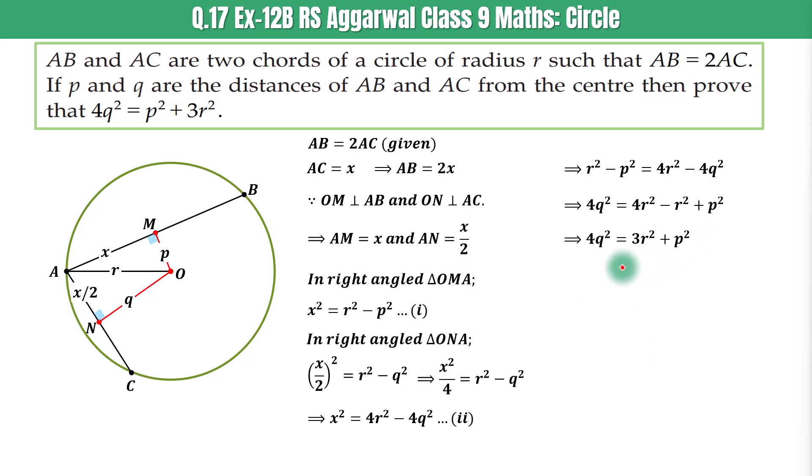Upon simplification, we get 4Q squared is equal to 3R squared plus P squared. This can be written as P squared plus 3R squared. So this is how we can prove 4Q squared is equal to P squared plus 3R squared.